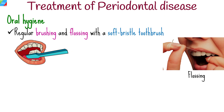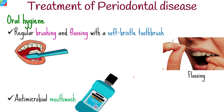The treatment approach for periodontal disease in people with HIV and AIDS is generally similar to that for the general population, but there are some considerations specific to this population. Good oral hygiene practices are crucial, including regular brushing and flossing, preferably with a soft bristle toothbrush and antimicrobial mouthwash.